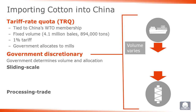In contrast to the TRQ, where the volume is set, there are other types of quota in which the volume varies. There are two tariff categories of variable volume quota: sliding scale and processing trade. As was the case with TRQ imports, the allocation among mills is determined by the government for both of these types of quota.